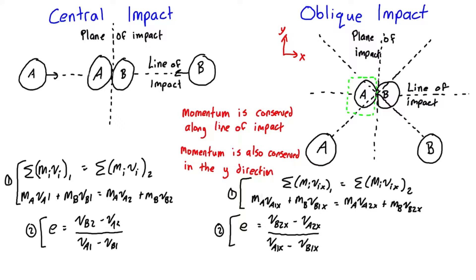And so because of that, momentum is conserved for each particle in the y direction. So if we just write the expression for the momentum of A just before the impact, we have m_A times v_Ay1.